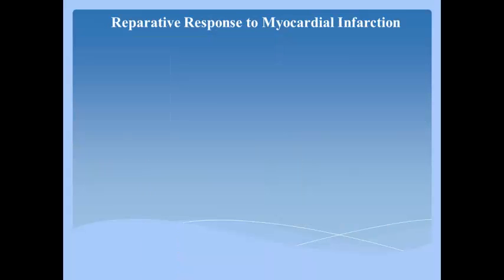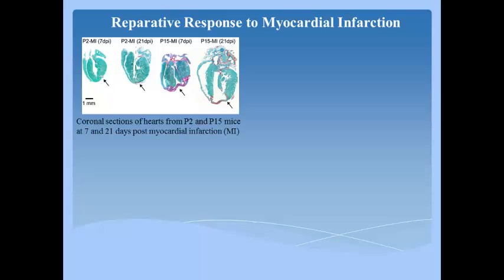Previously, extensive cardiac regeneration after injury leading to restoration of the ventricular wall without scar formation was observed in P1 but not P7 or P14 mice. Authors postulated that cardiomyocyte proliferation at P15 might allow cardiac regeneration. They evaluated this hypothesis by subjecting mice to myocardial infarction and comparing the response to those of P2 and P21 animals.